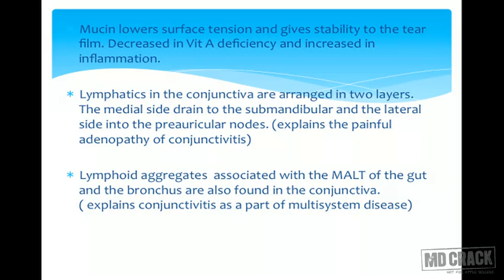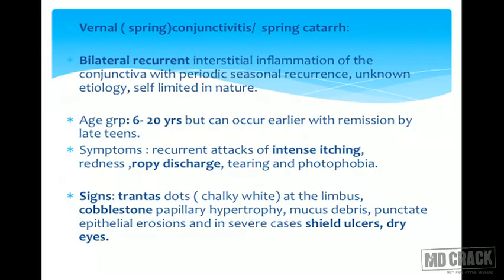Lymphatics in the conjunctiva are arranged in two layers: the medial side drains to the submandibular nodes, while the temporal side drains to the preauricular nodes. This gives rise to painful adenopathy in viral conjunctivitis and in granulomatous conjunctivitis. Lymphoid aggregates associated with MALT — mucosa-associated lymphoid tissue of the gut and bronchus — are also found in the conjunctiva, explaining conjunctivitis as part of multisystem disease.